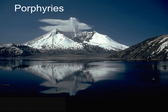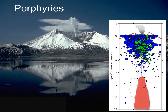Whereas mafic layered complexes develop relatively deep in the crust, porphyries form at a much shallower depth — not quite as shallow as epithermal deposits, but not much deeper. Porphyries generally form in and around the magma chambers that feed volcanoes. This is Mount St. Helens, a few years after it blew its top. Seismic surveys show the main magma chamber extends from 7 to 12 kilometers depth, with a smaller chamber at about 2 kilometers. Mount St. Helens is a porphyry deposit in the making.